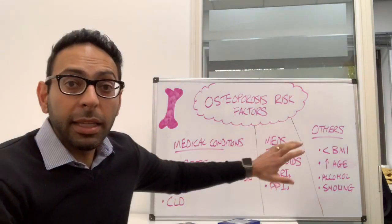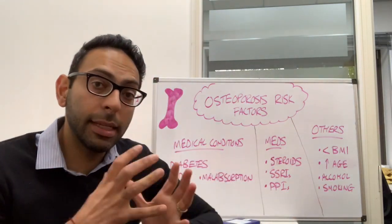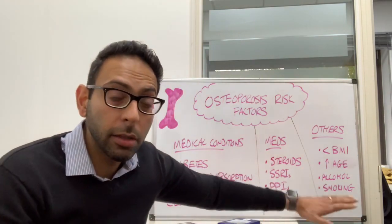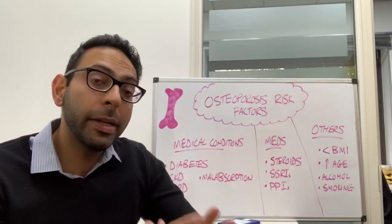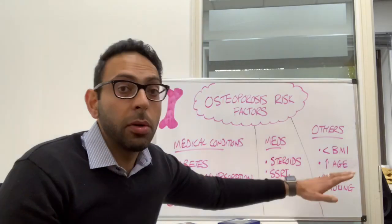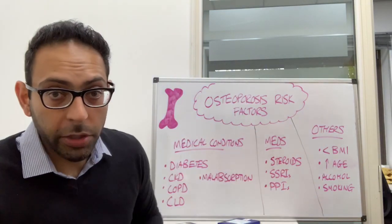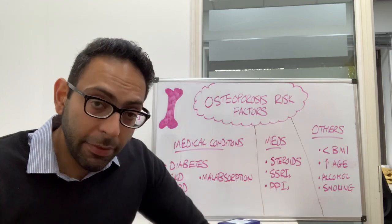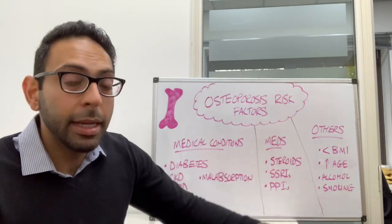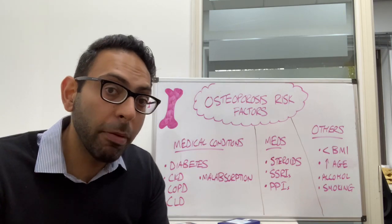Some other things to bear in mind that you should be looking out for in your questions: low BMI — so less than 18.5 — increasing age, alcohol greater than three units per day, and smoking as well. So multiple risk factors for osteoporosis. There are loads more, but these are the ones I would not want to miss in a medical exam question or role play.